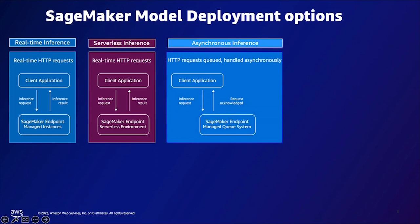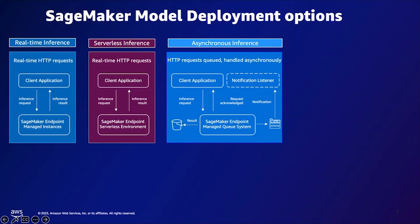The third is async inference. Async inference works in a queue architecture — instead of making a request and getting the model response in real-time, you can place an inference request onto a queue, then get a notification in real-time that your request has been processed. SageMaker will automatically scale the compute instances and models to handle the size and performance of your use case. This is a great architecture for use cases that require longer compute time, or when you want to scale down instances to zero — useful for computer vision or NLP use cases.